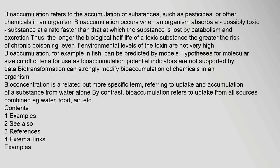Bioaccumulation refers to the accumulation of substances, such as pesticides or other chemicals, in an organism. Bioaccumulation occurs when an organism absorbs a possibly toxic substance at a rate faster than that at which the substance is lost by catabolism and excretion. Thus, the longer the biological half-life of a toxic substance, the greater the risk of chronic poisoning, even if environmental levels of the toxin are not very high.